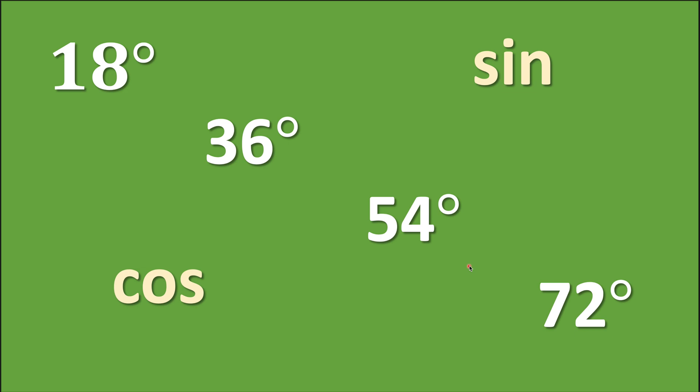Now we're going to talk about sines and cosines of 18 degrees, 36 degrees, 54 degrees, and 72 degree angles. Let's start with sine of 18 degrees — that's actually the most difficult part. The rest of it is pretty much a piece of cake. So how do we calculate sine of 18 degrees?